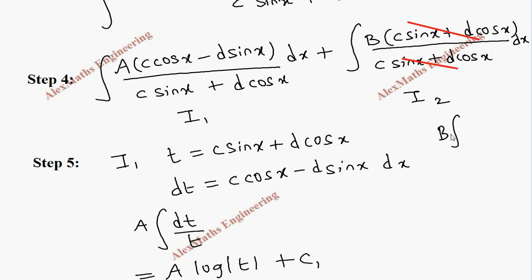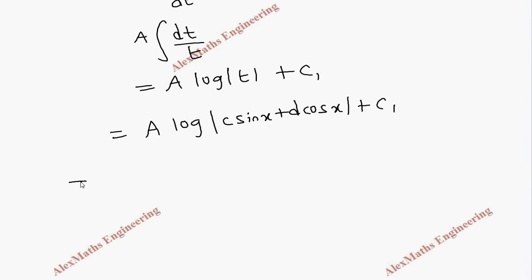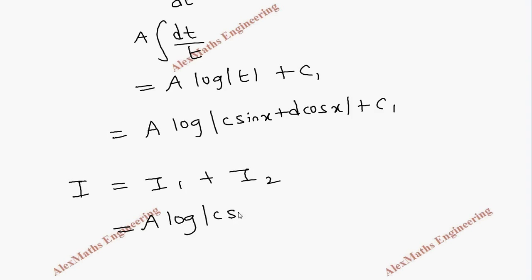For I2, since only the constant B remains, the integral of dx gives Bx + C2. Combining I1 and I2, the general result is: A·log|c sinx + d cosx| + Bx + C.